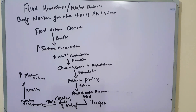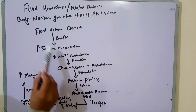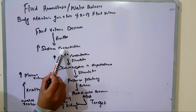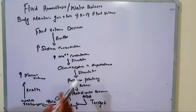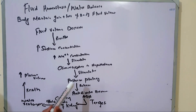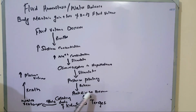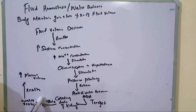To summarize: when body fluid volume decreases, sodium concentration increases in the blood, which stimulates osmoreceptors in the hypothalamus. These stimulate the posterior pituitary to release antidiuretic hormone, which targets the collecting ducts of the kidney, causing water reabsorption. This results in maintenance and increase of plasma volume, completing the fluid homeostasis mechanism.